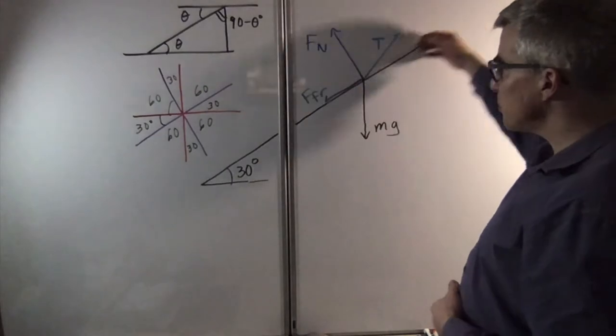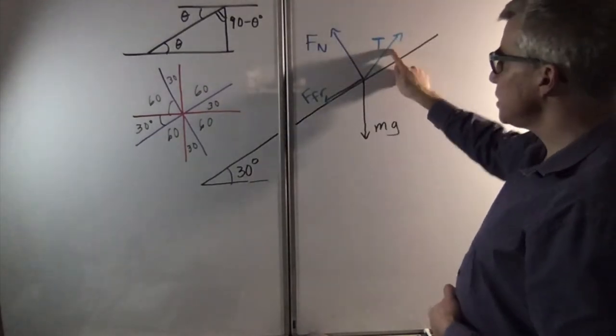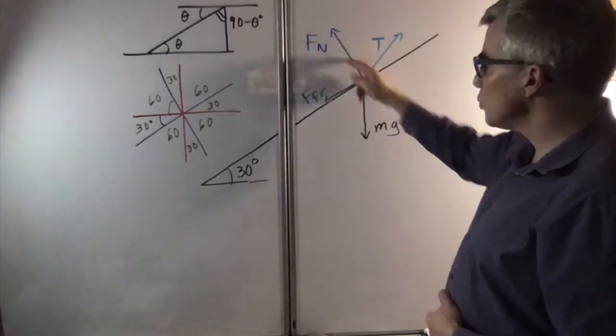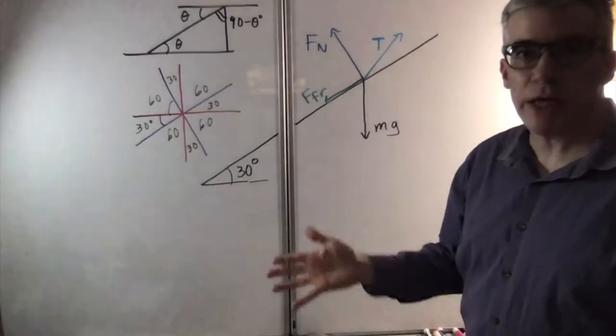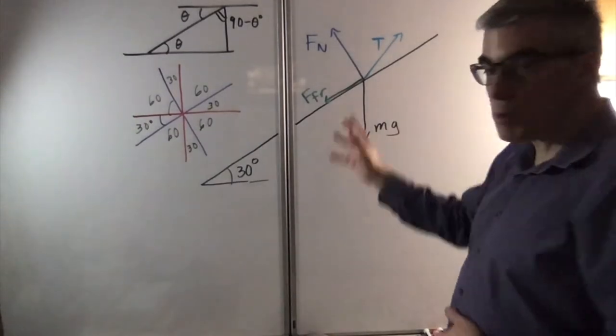Suppose you have a mass being pulled up an incline with a rope with tension T. It's got a friction force, a normal force, and gravity, and you want to get your sines and cosines straight and figure out what angles are which.